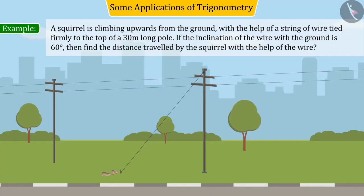A squirrel is climbing upwards from the ground with the help of a string of wire tied firmly to the top of a 30 meter long pole. If the inclination of the wire with the ground is 60 degrees, then find the distance travelled by the squirrel with the help of the wire.